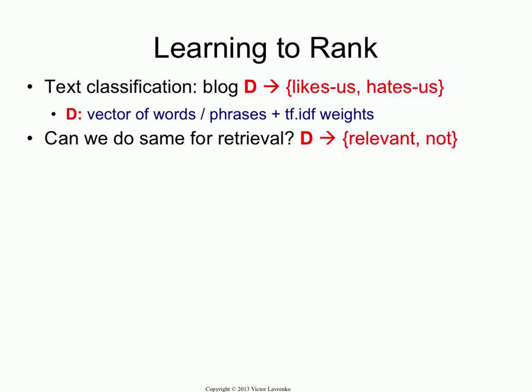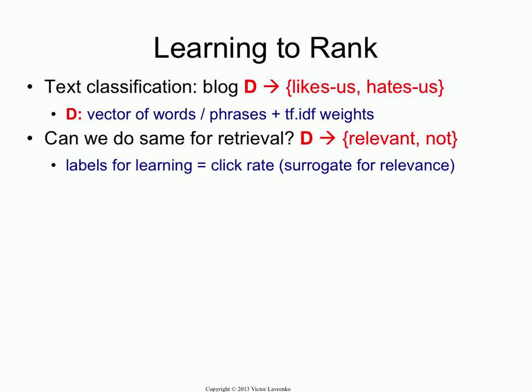Now, if you're building a search engine, could we do the same thing for retrieval? Could you use the same mechanism to predict if the document is going to be relevant or non-relevant? You've got a query, you've got a set of documents. Can we learn to classify documents into relevant and non-relevant information? Maybe we can use something like clicks as surrogates for relevant and non-relevant examples. And the answer is it's been tried in the standard way for many, many years and it never works.